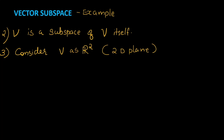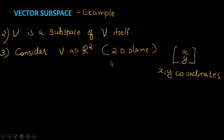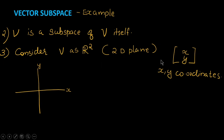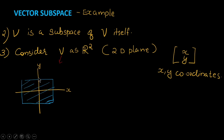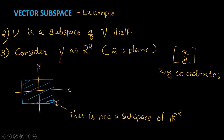Consider another example: R² as our vector space. R² is used to represent the 2D plane, where any vector has two elements corresponding to XY coordinates. Consider the entire XY plane as vector space V, and let's check whether a particular subset of the XY plane is a subspace or not.